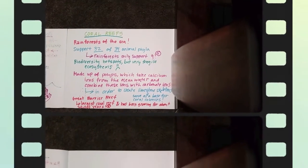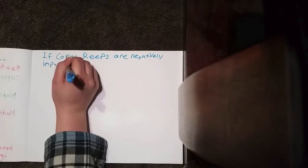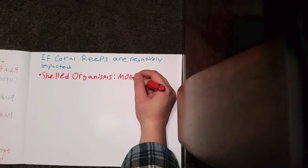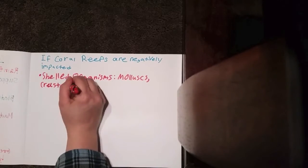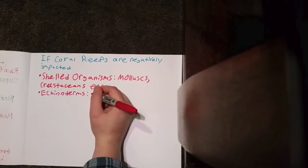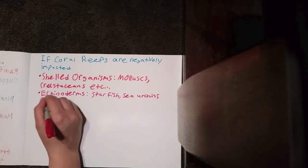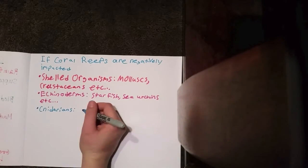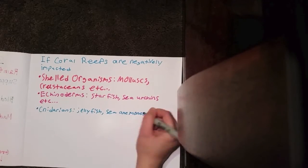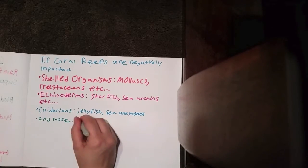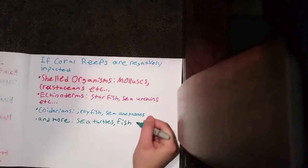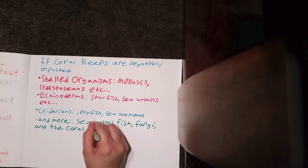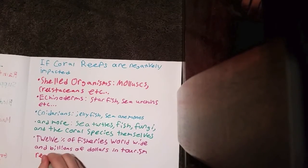As climate change continues and coral reefs are negatively impacted, shelled organisms such as mollusks, crustaceans, and echinoderms such as starfish and sea urchins, cnidarians such as jellyfish and sea anemones, as well as sea turtles, fish, fungi, and coral species themselves will also be affected. 12% of the world's fisheries and billions of dollars in tourism will also be negatively affected.